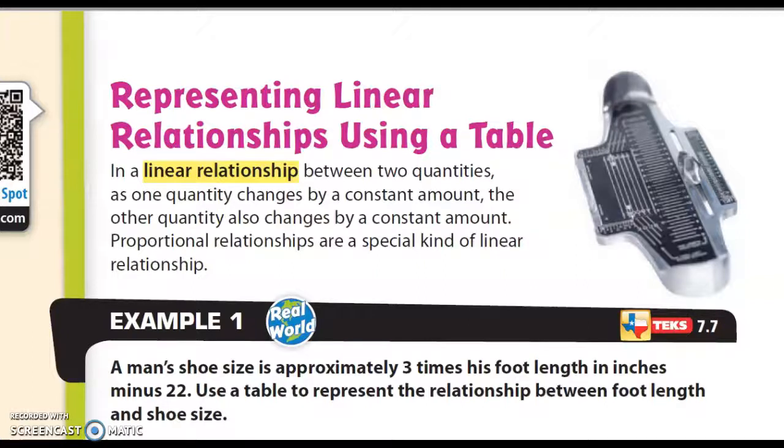Now, as you notice here in this example, in a linear relationship between two quantities, as one quantity changes by a constant amount, the other quantity also changes by a constant amount. Proportional relationships are a special kind of linear relationship. So if we look at this example, it says a man's shoe size is approximately three times his foot length in inches minus 22. Use a table to represent the relationship between foot length and shoe size.